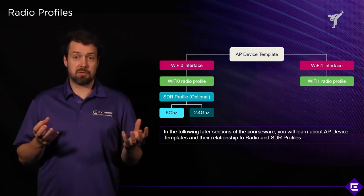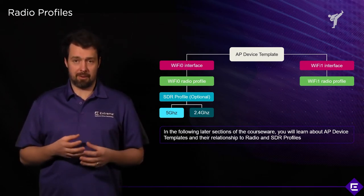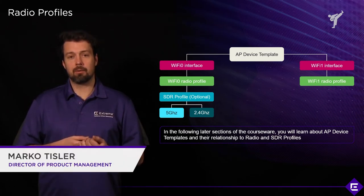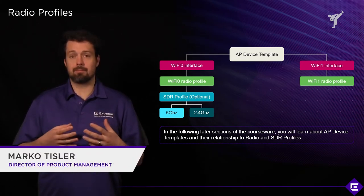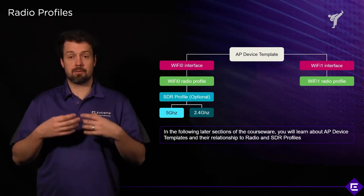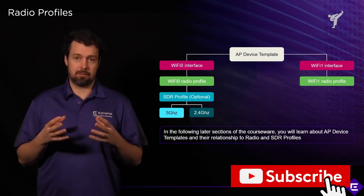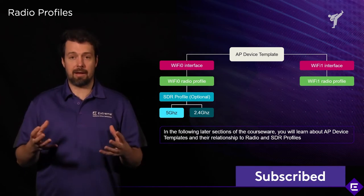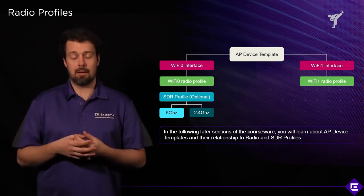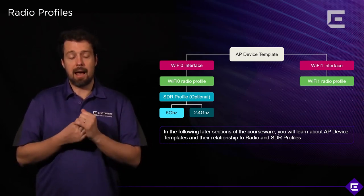So far in terms of Extreme Cloud IQ we've only discussed the RF part of the wireless network when we were talking about cooperative control protocols. We said the RF challenges in terms of channel selection and power are solved and addressed by those cooperative control protocols — namely ACSP, the Auto Channel and Power Selection Protocol.